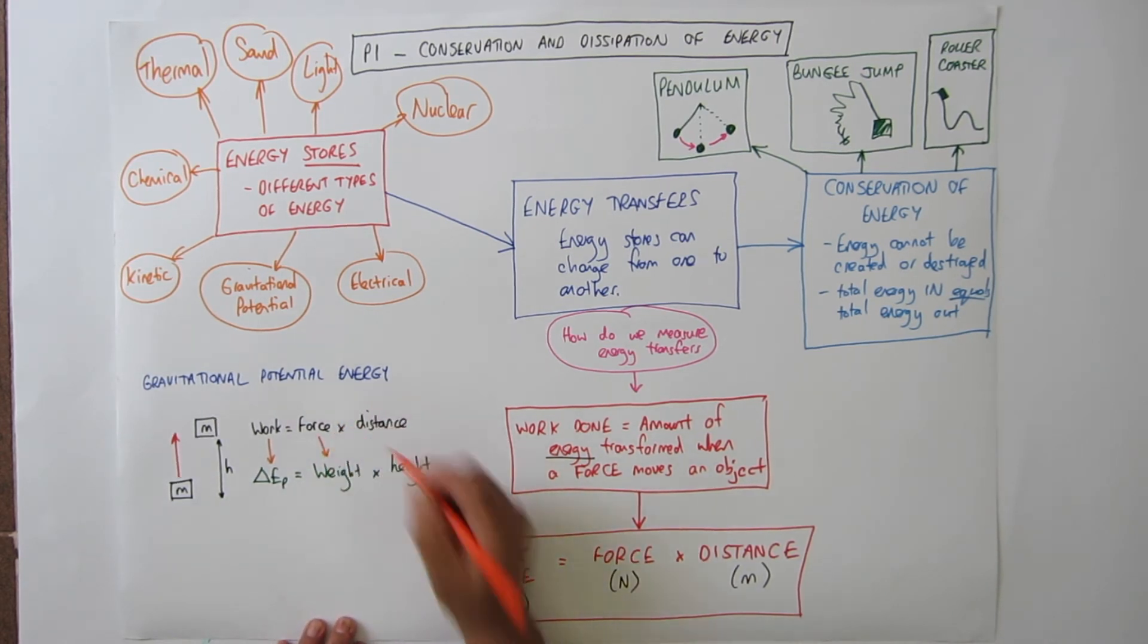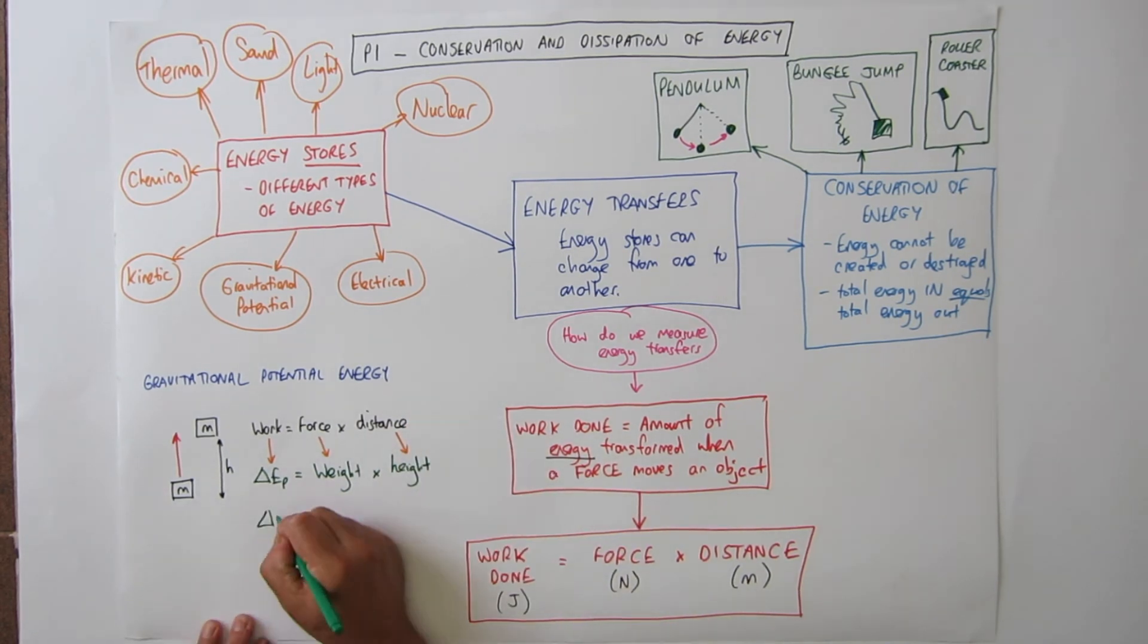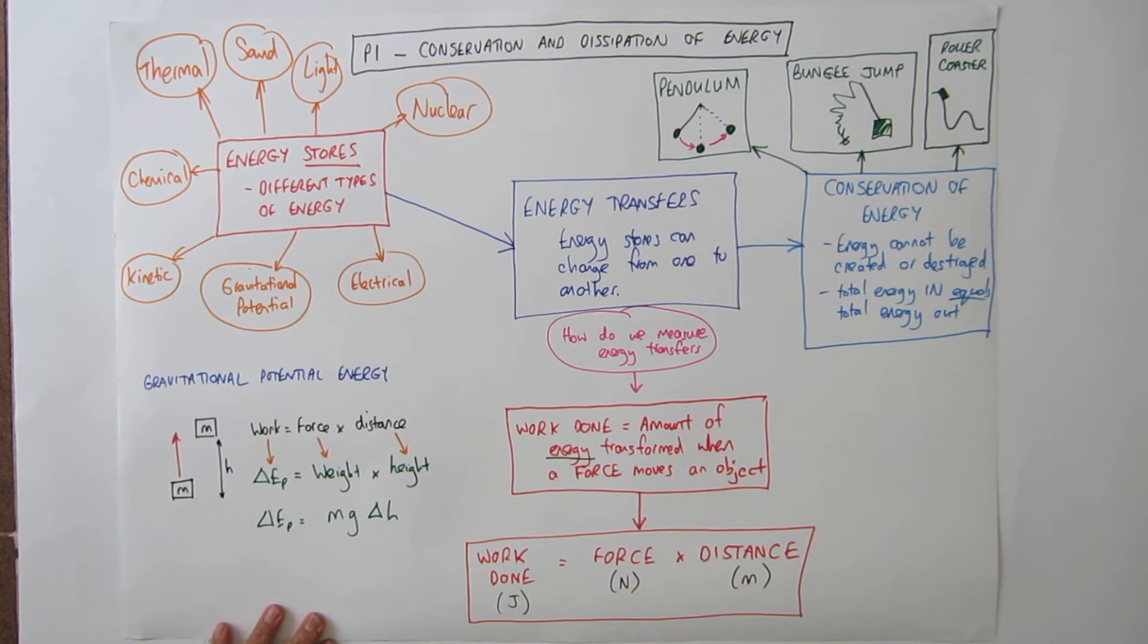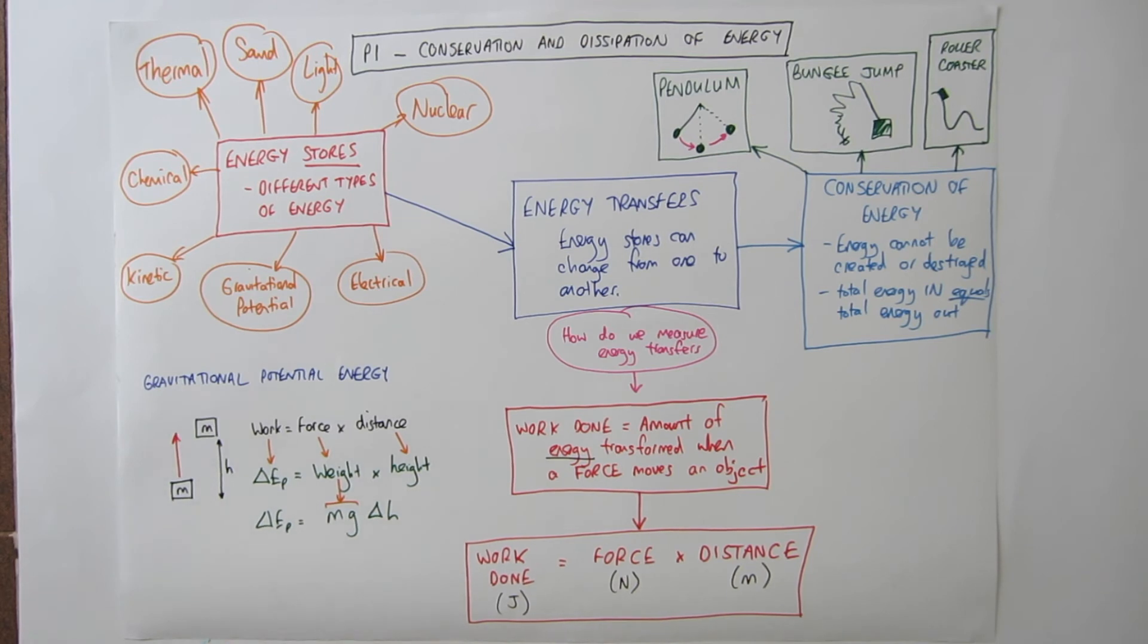The work done is the gain in GPE. The force is the weight of the object and the distance moved is the height it gains. And we have an equation for weight which is W equals MG. So weight becomes MG. Leaving us with the equation for gravitational potential energy.